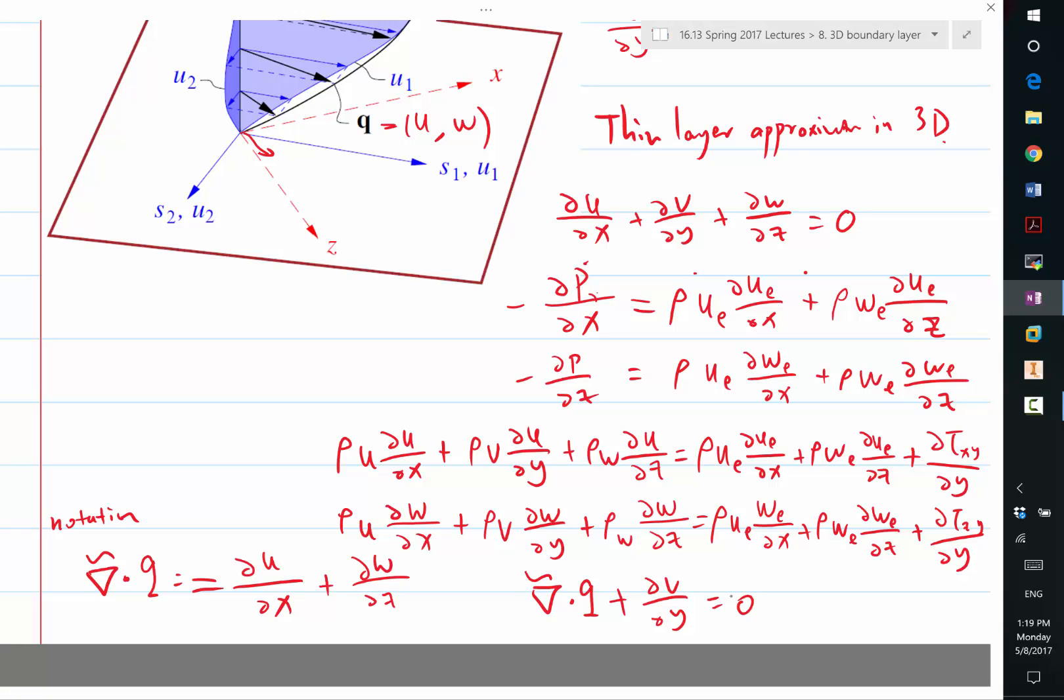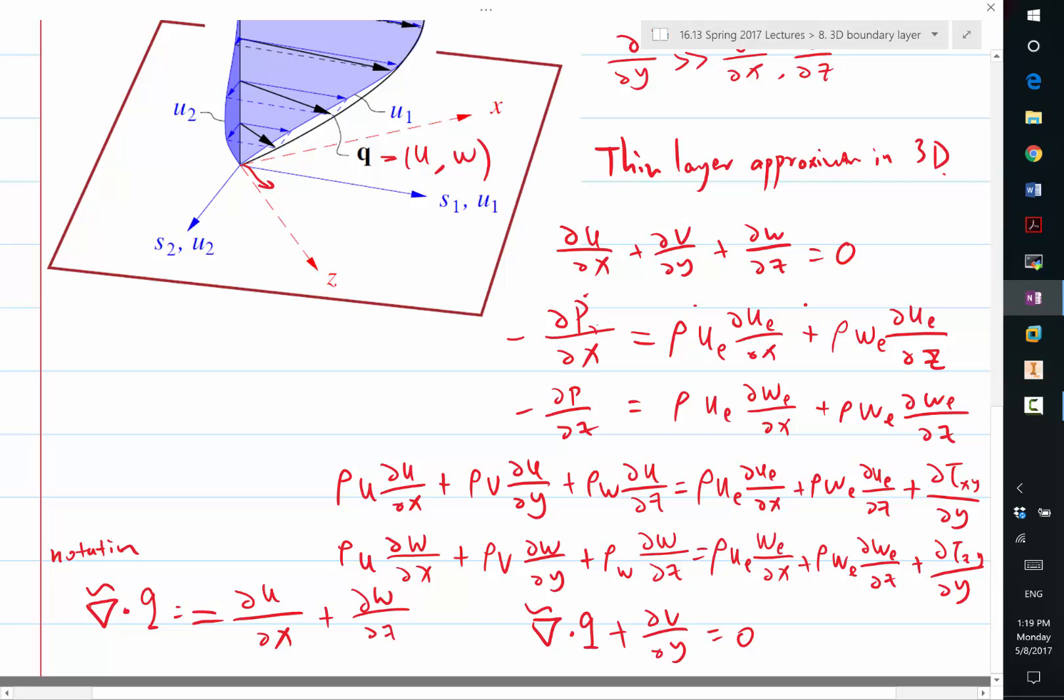All right. Any questions? So, this is only for the local system. The coordinates are changing. These are for local systems, and the coordinates are... Yeah, the definition of x and z are changing as you move along the surface, because the surface is usually curved, right? Yeah, that's right.